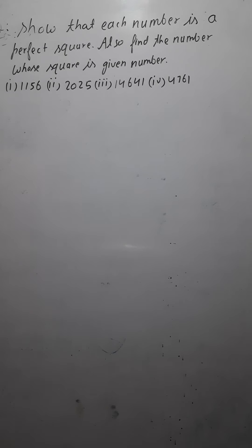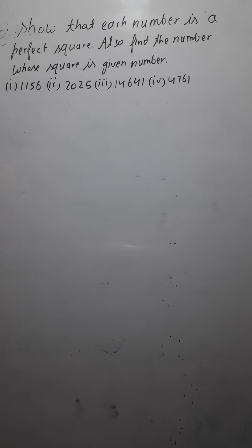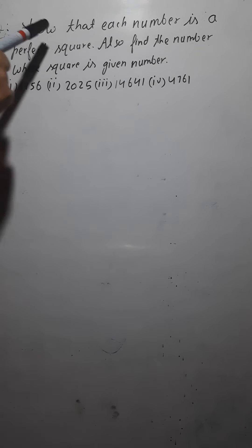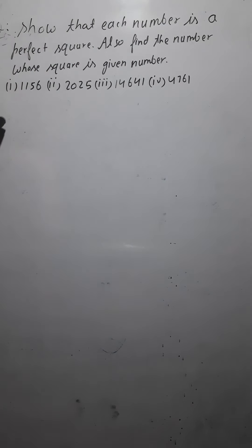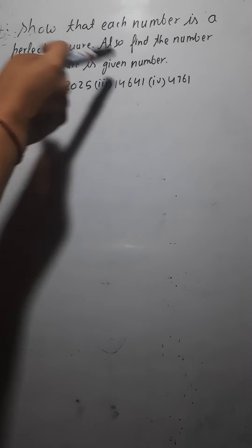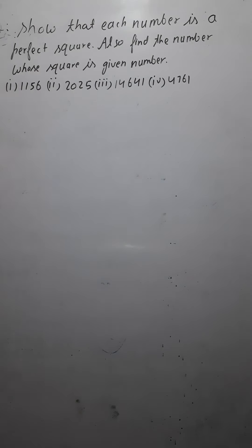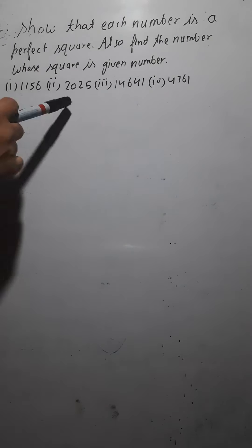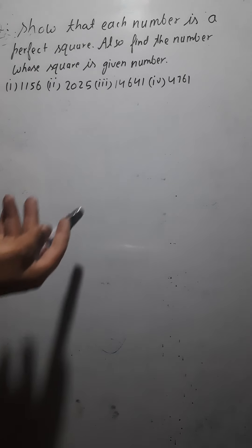Hello everyone. Today we would move ahead in the third chapter of class 8 mathematics — Squares and Square Roots. I am going to discuss some new questions. The question is: show that each given number is a perfect square, and also find the number whose square is the given number — meaning, find which number was squared to get the given number.